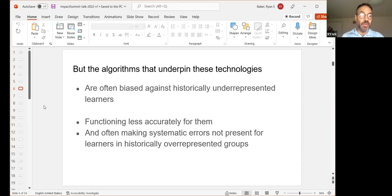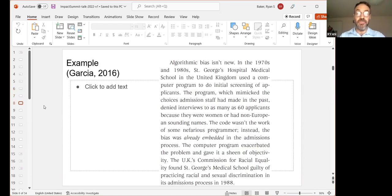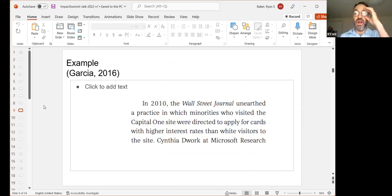There's a lot of applications of these methods predicting dropout and success and failure, automated detection of things like whether students are learning and whether they're engaged, and just to support basic scientific discovery in education. But one of the big problems that we've discovered as a field is that the algorithms that underpin these technologies are often biased against historically underrepresented learners.